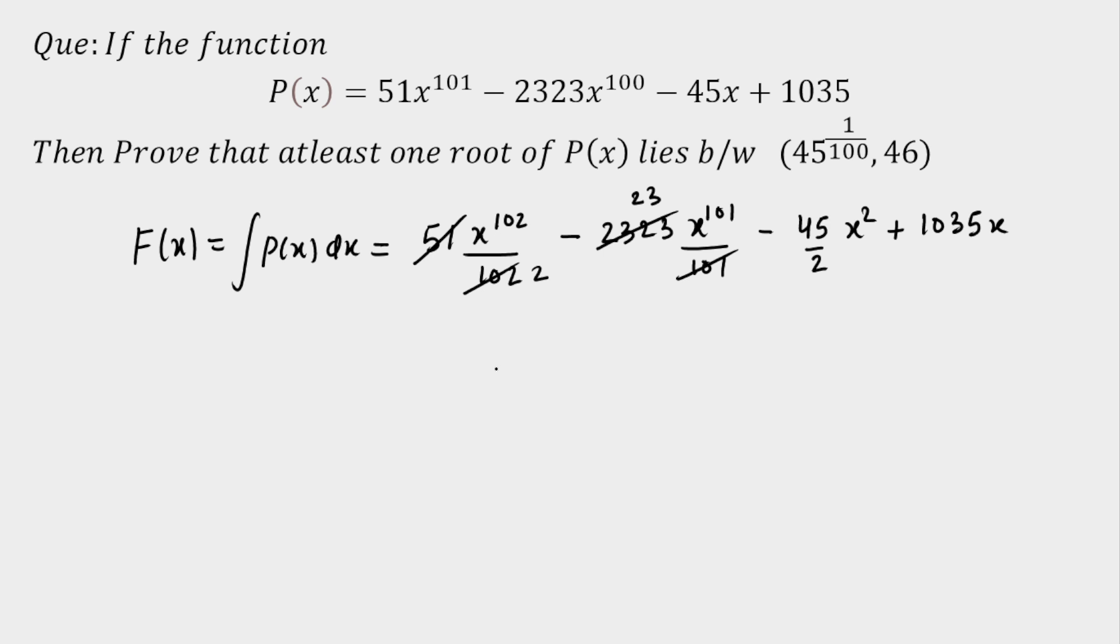Now throughout I am going to take x/2 common here. So if I take x/2 common here, remaining will be x^101. As you can see, now this is 23 times and I have taken 2 common in denominator, so I am going to multiply by 2 here, so we will get this as 46x^100 because I have taken x common here.